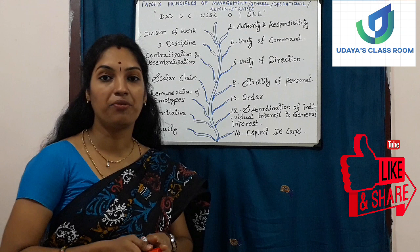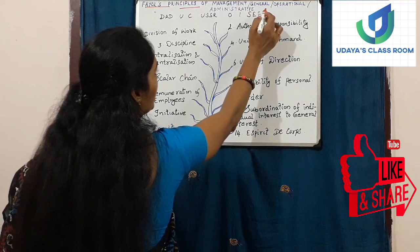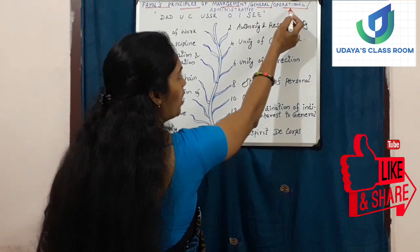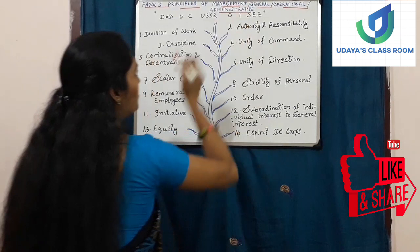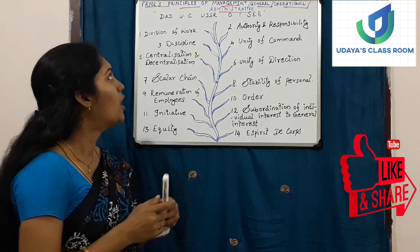Henry Fayol has put forward 14 principles, and all these principles could be used in administration. These Henry Fayol principles are also called the general principles of management, the operational principles of management, and the administrative principles of management.